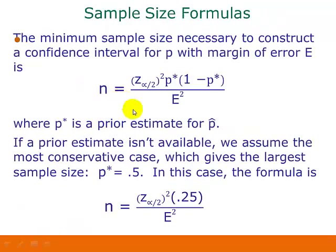What we end up with is two different formulas for our sample size, depending on what situation we have. Our minimum sample size necessary to construct a confidence interval for p with a margin of error E is this one. We take our critical value and square it, times p-star, times 1 minus p-star, divided by E-squared.